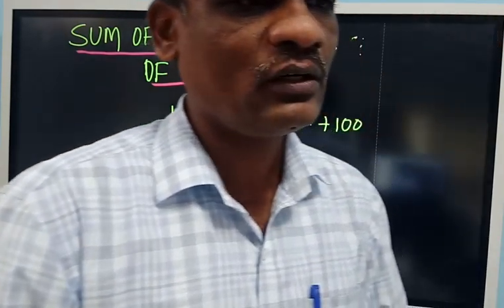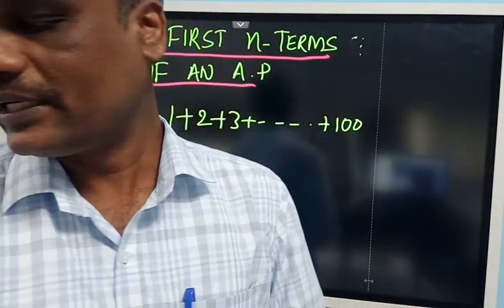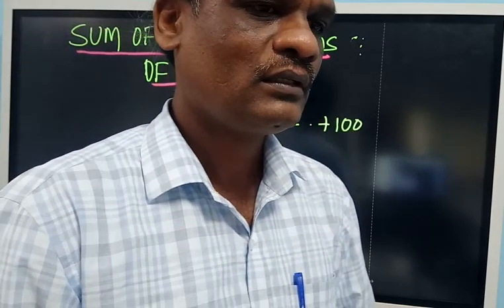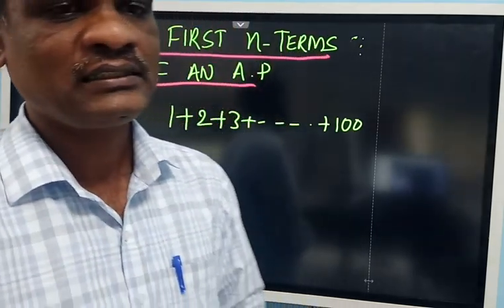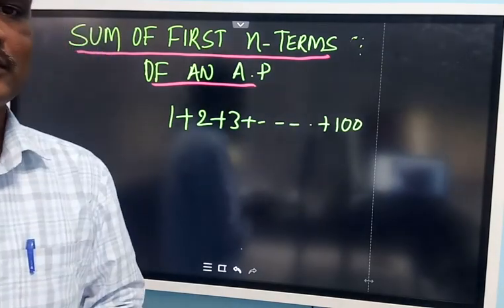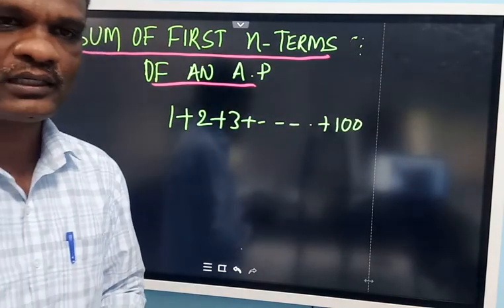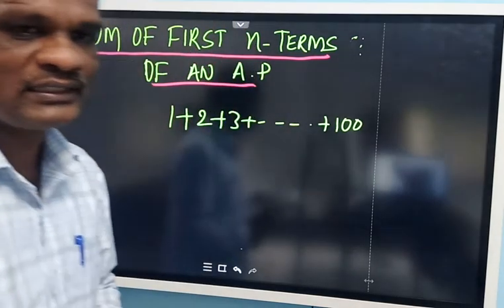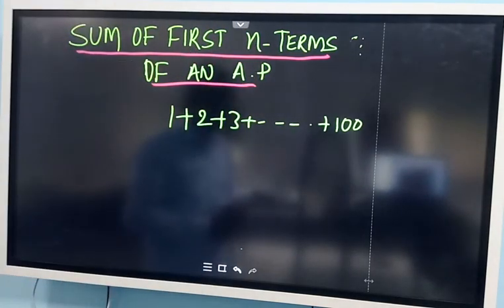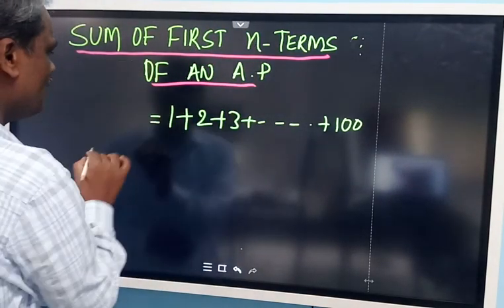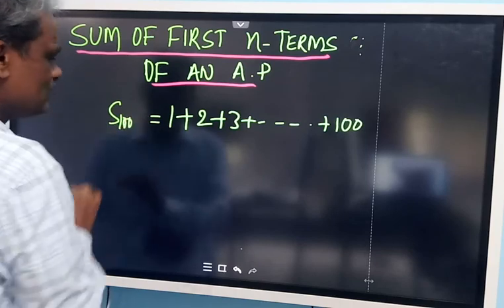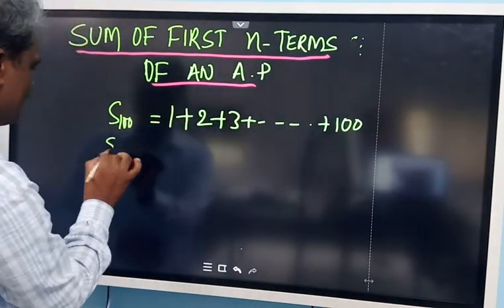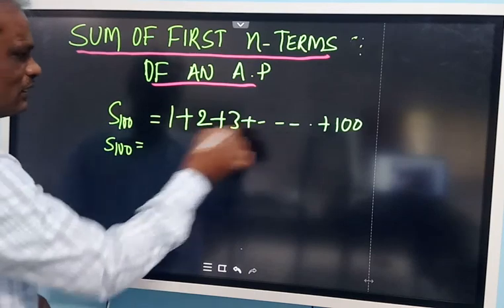The work given to Gauss was: add 1 plus 2 plus 3 up to 100. When the teacher gave this work, immediately within no time he responded and gave the answer as 5050. The teacher was surprised and asked how he got the answer in such a short span of time. Then he replied with his method — this is the sum of first 100 natural numbers.